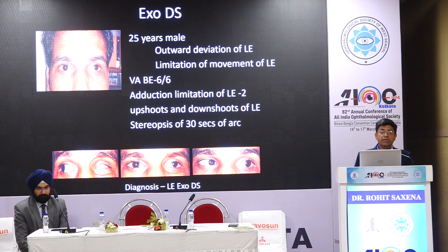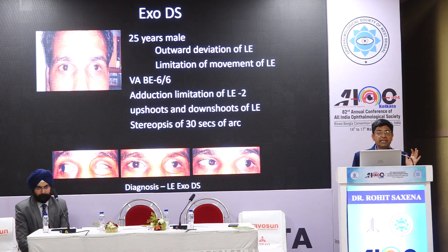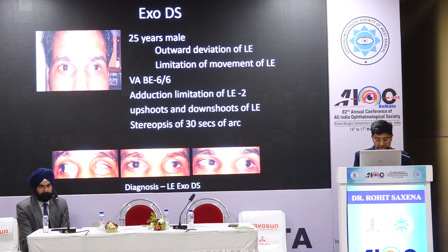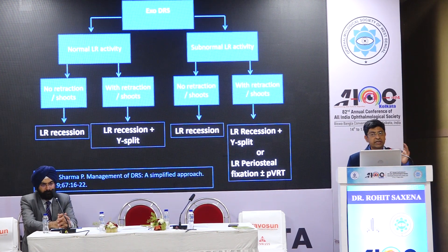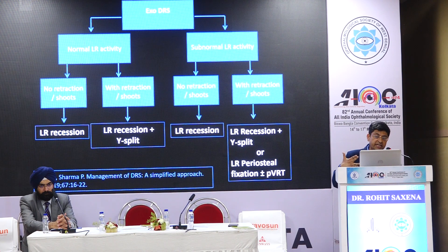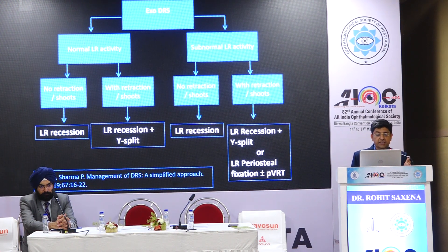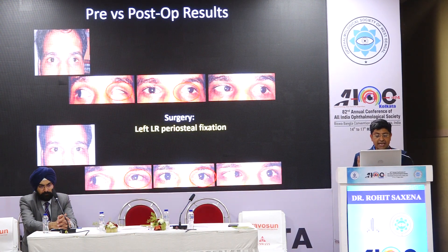ExoDuane's is actually a more severe form because the lateral rectus is not only abnormally innervated but has also gone into contracture — these patients usually have a lot more co-contraction. On attempted adduction the eye can completely disappear into the upper lid. If there is normal lateral rectus activity with no retraction or shoots, just recess the lateral rectus. If there are associated retractions or shoots, do a greater recession and Y-split to stabilize the globe. For severe co-contractions with subnormal lateral rectus activity, periosteal fixation may be required.